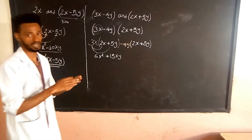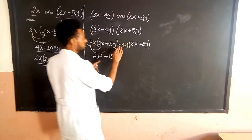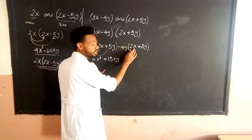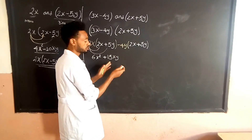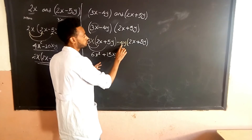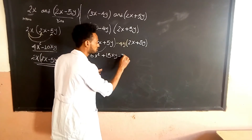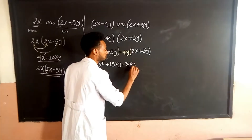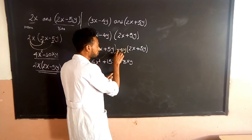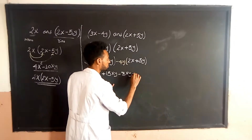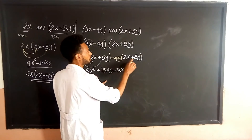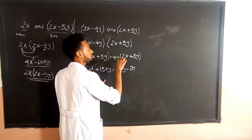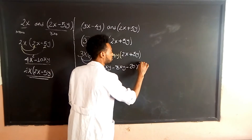In the bracket, we also have negative 4y times 2x. Negative times positive gives negative — 4 times 2 is 8, y times x is xy. Then negative 4y times 5y: negative times positive is negative — 4 times 5 is 20, y times y is y squared.